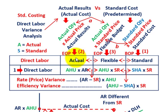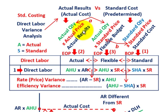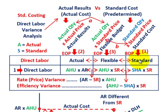Next we determine actual costs. At the end of the period, we take the actual quantity of direct labor — some number of hours — times the actual price or actual hourly rate. So actual quantity times actual price gives us our actual results. Then we can determine our flexible amount, which is simply taking the actual quantity from our actual results and multiplying it by the standard price from our standard. So actual quantity times standard price equals the flexible amount.